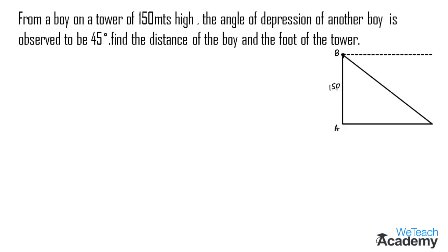The tower makes an angle of 90 degrees at the ground. The angle of depression is given as 45 degrees, so we get 45 degrees here, and the alternate angle will also be 45 degrees at vertex C. Let us assume C is the position of the other boy, and BD is the horizontal through B, which is the point of observation.